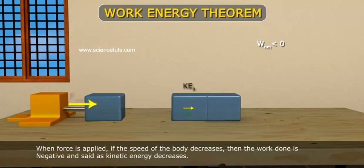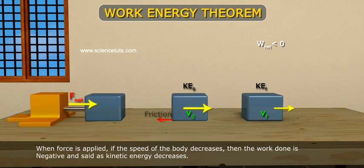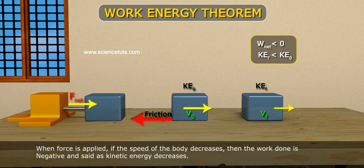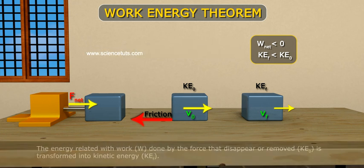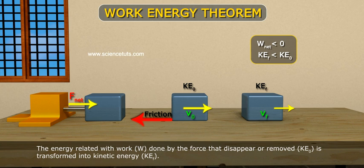When force is applied, if the speed of the body decreases, then the work done is negative and the kinetic energy decreases. The energy associated with the work done, W, by the force that disappears or is removed, is transformed into kinetic energy.